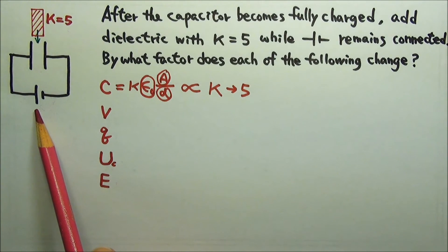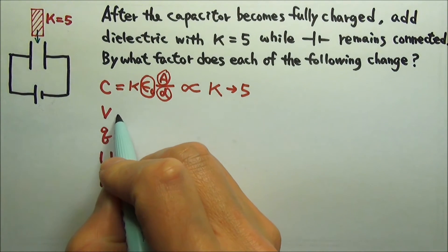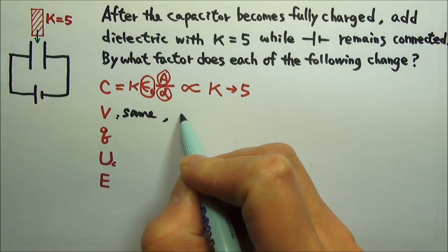The battery stays connected, and the battery maintains constant voltage across its terminals. So the voltage stays the same, or changes by a factor of 1.